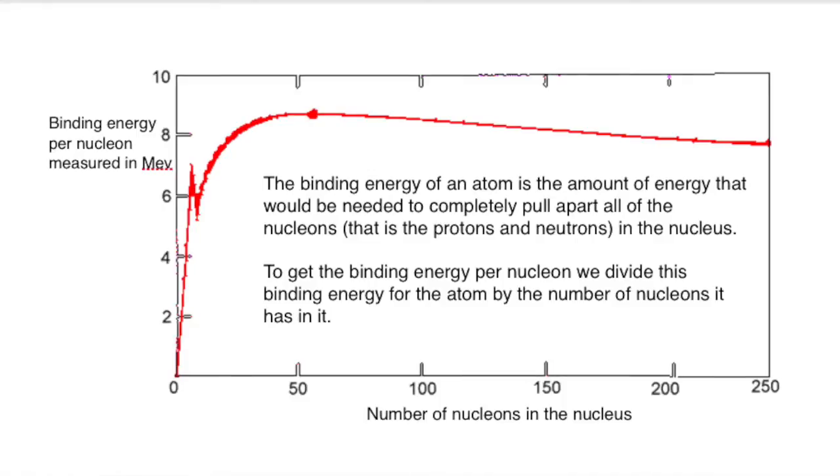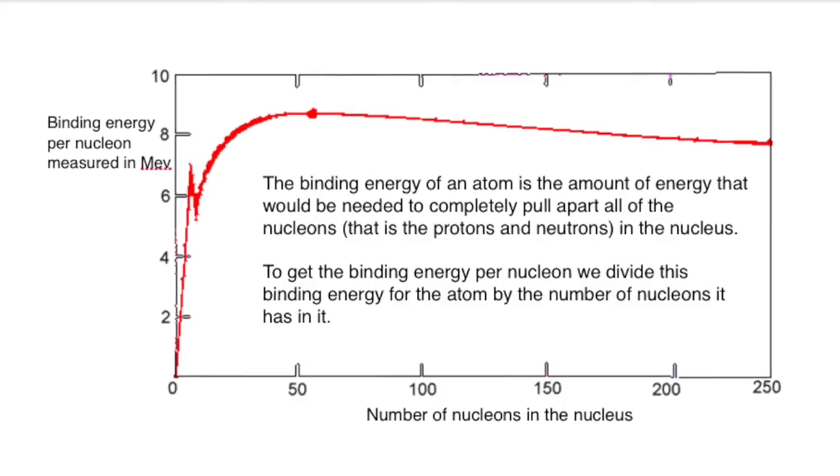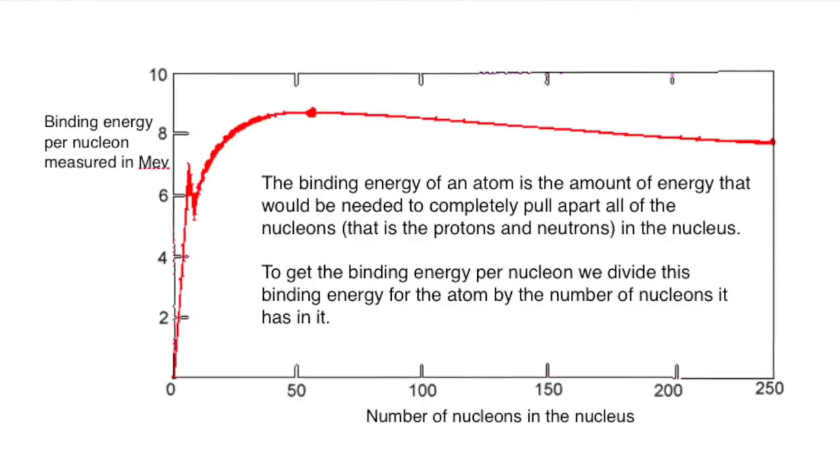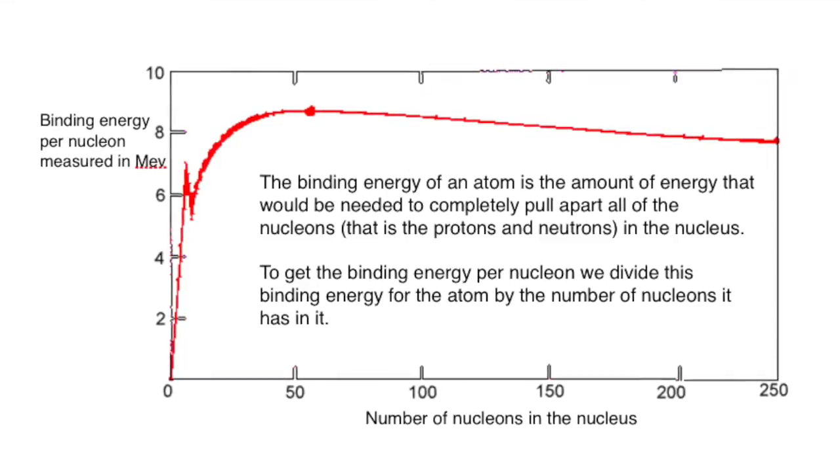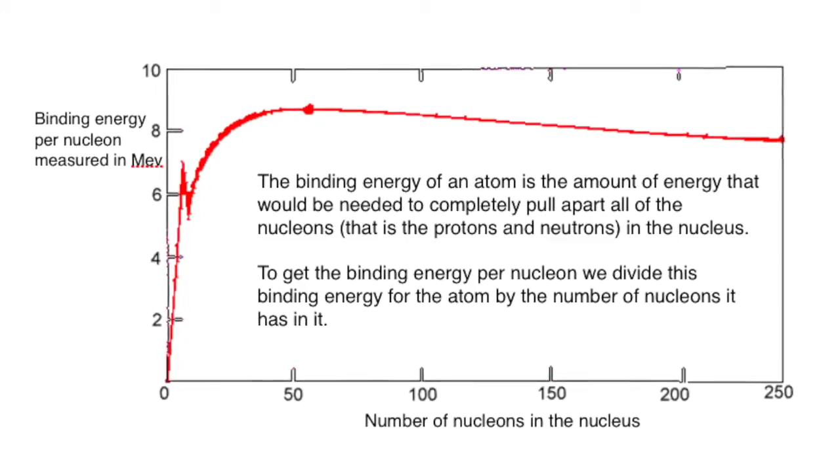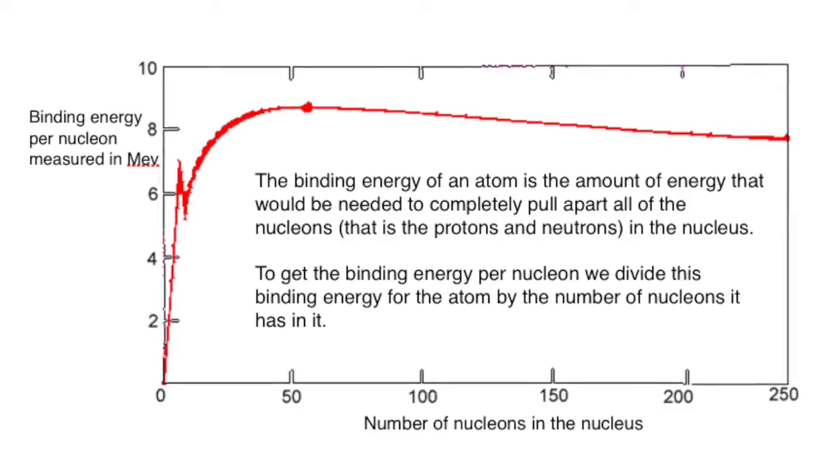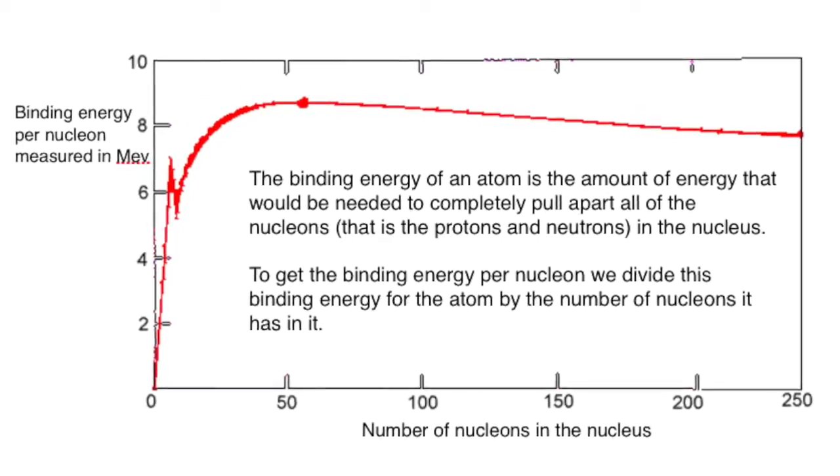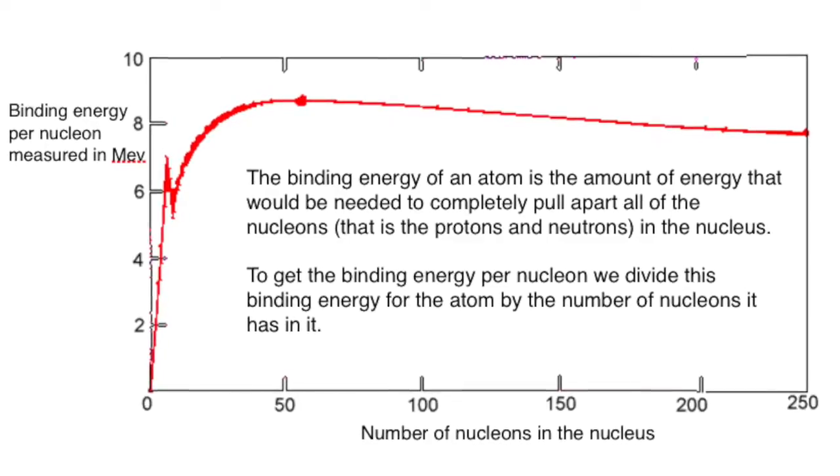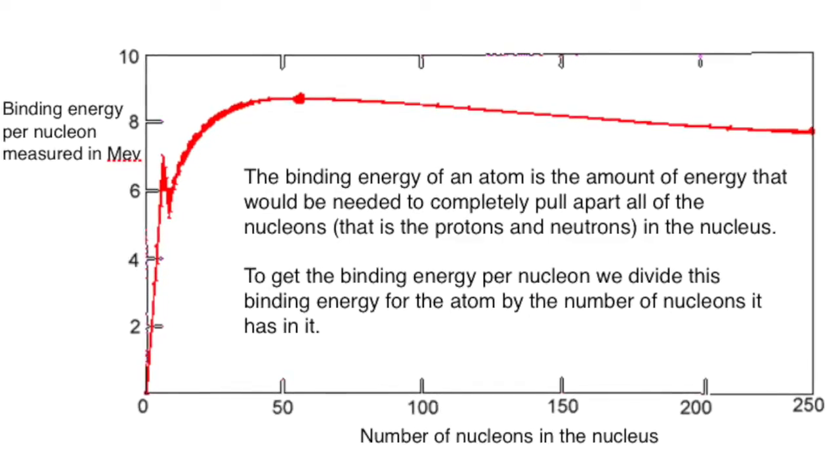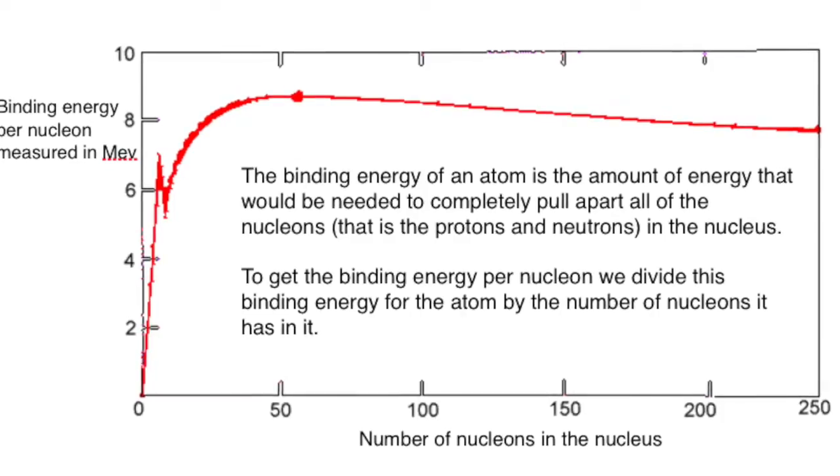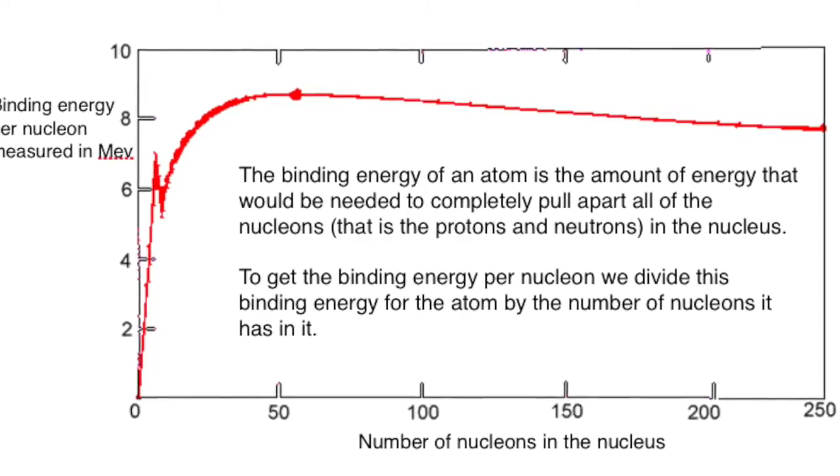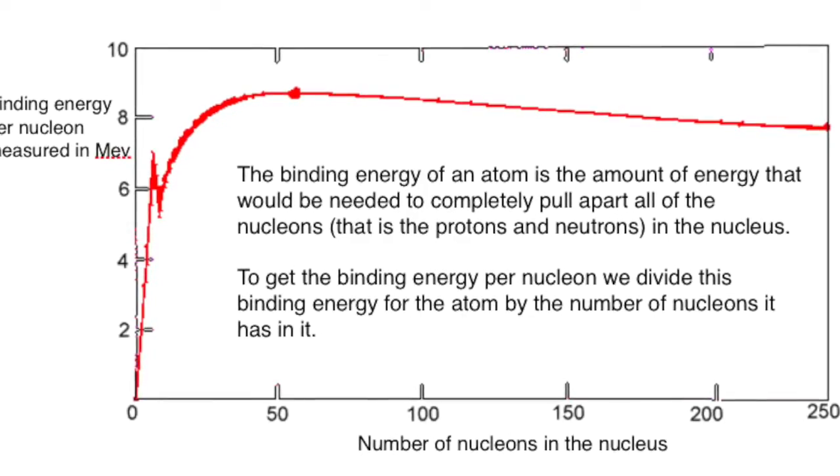So, another way of defining the binding energy is that it is the amount of energy that would be needed to pull all the bits of the nucleus of an atom apart. So, the binding energy per nucleon, which is shown on the y-axis of this graph, is the total binding energy for that atom, and the different atoms are shown on the x-axis, divided by the number of particles, that is, the number of protons and neutrons in the nucleus.